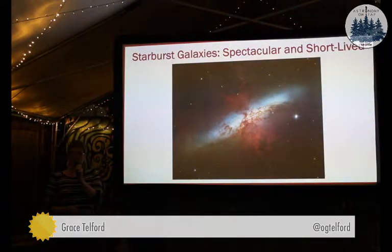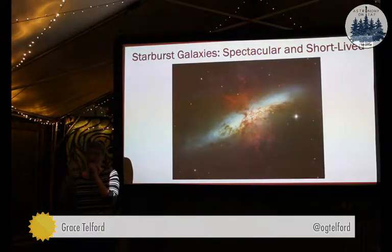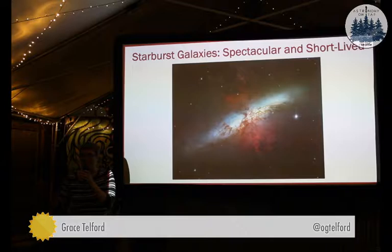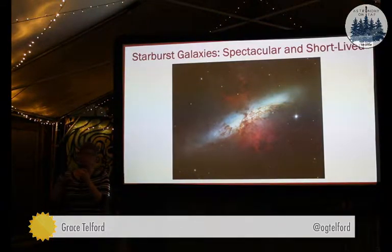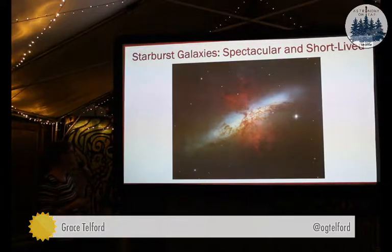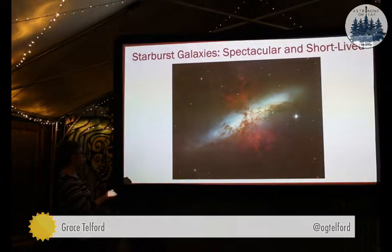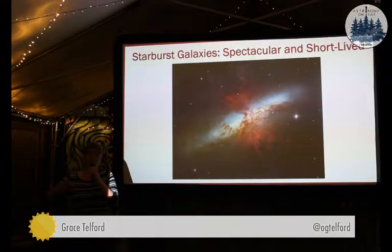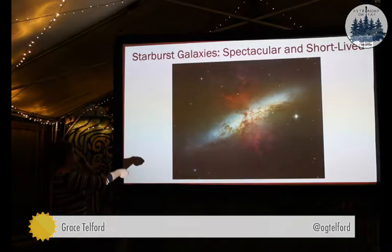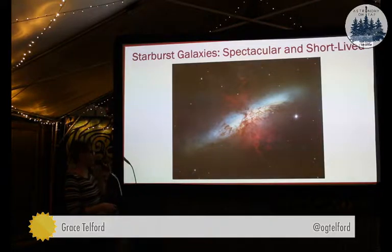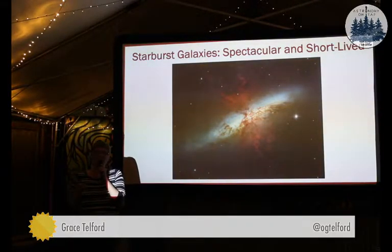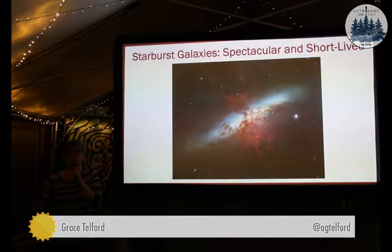First up we have our starburst galaxies. These are star-forming galaxies that have somehow recently come into a whole bunch of gas that they didn't have available to them before. They have the ability to form stars at a very, very high rate relative to the normal amount of star formation for a galaxy of its size. As a result, you have a lot of these massive young stars that are dying and exploding as supernovae and injecting a lot of energy into the gas. This image is showing these outflows of gas coming out of the galaxy, because there's just so much star formation happening that it can essentially evacuate the gas from the galaxy.